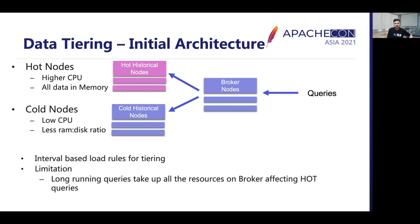Another key observation was that the value of data decreases as it ages, with use cases shifting from interactive analytics to batch reporting after three months for most users. So we split the data into two tiers. A hot tier with high compute power where all data was kept in memory, and a cold tier with low CPU and RAM relative to the data assigned to each node, where most data is served from disk. Query performance in the cold tier was slower, but since data was only being queried for batch reporting, slow queries were acceptable. Support for interval-based load rules was added to automatically move data from hot to cold tier as it ages.